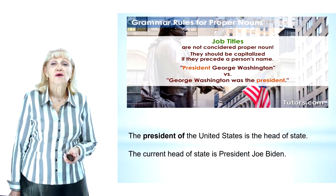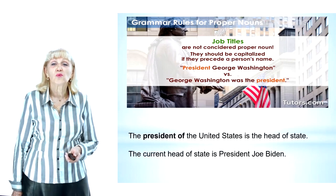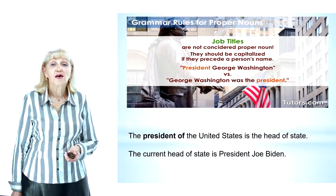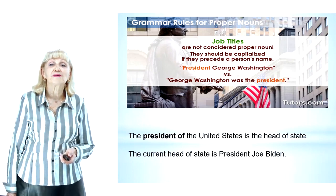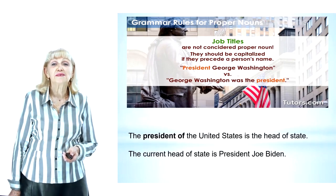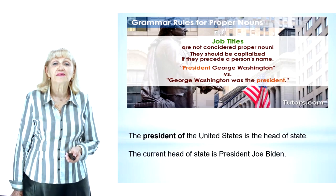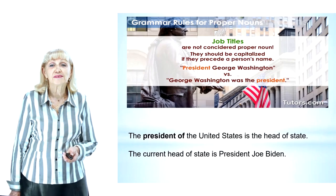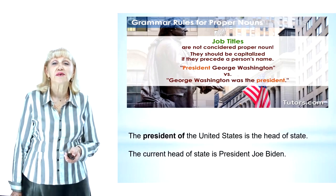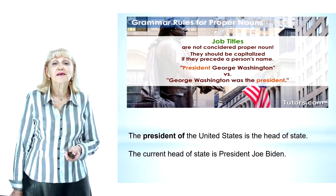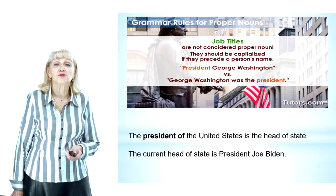President George Washington. George Washington was the President. The President of the United States is the Head of State — we are not talking about a specific President such as Joe Biden, so 'President', despite its gravitas, remains lowercase. If we wanted to capitalize the word 'President', we would have to turn it into a proper noun. To do so, all we have to do is attach it to the name of the President: 'The current Head of State is President Joe Biden.'